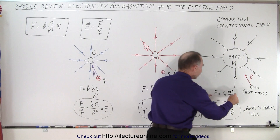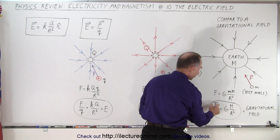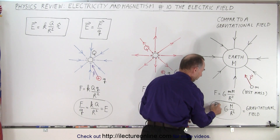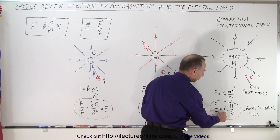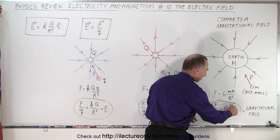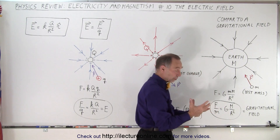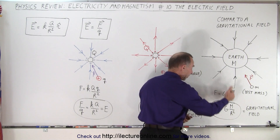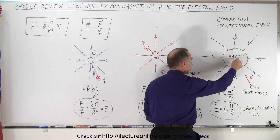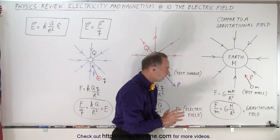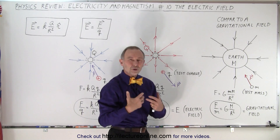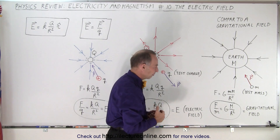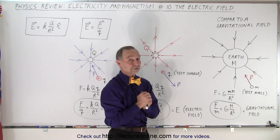If we divide both sides by the mass of the test mass, the ratio of the force experienced by the test mass divided by the size of the test mass equals G times the mass that causes the gravitational field — the Earth — divided by the distance between the test mass and the Earth squared. This expression is the gravitational field, and although we don't use it very much in physics, it still represents the gravitational field.